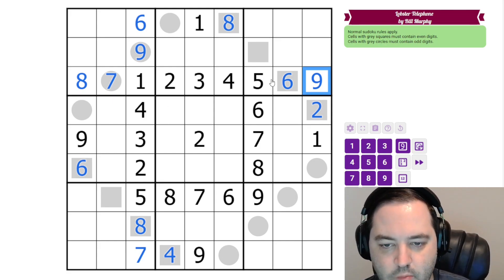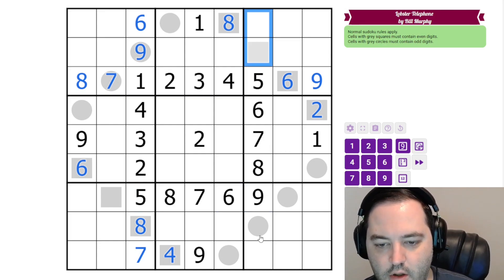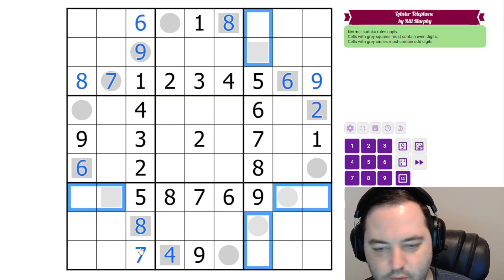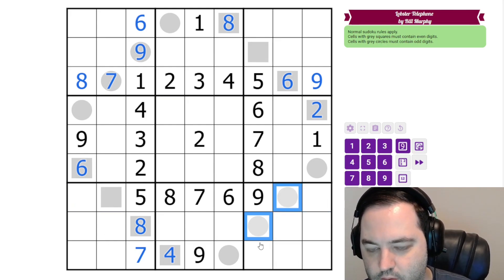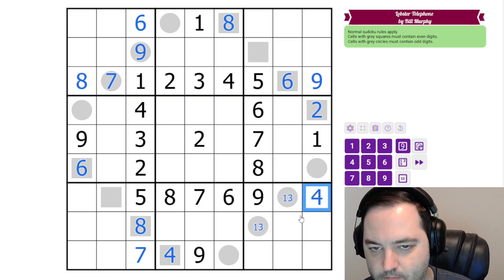And we're going to do something similar for row seven and column seven. This time we have all the high digits, five through nine. So these cells are from one, two, three, four. And in particular, these two cells are odd, so they must be a one, three pair. This can't be two or one, three, so it's four. This can't be one or three, so it's two.